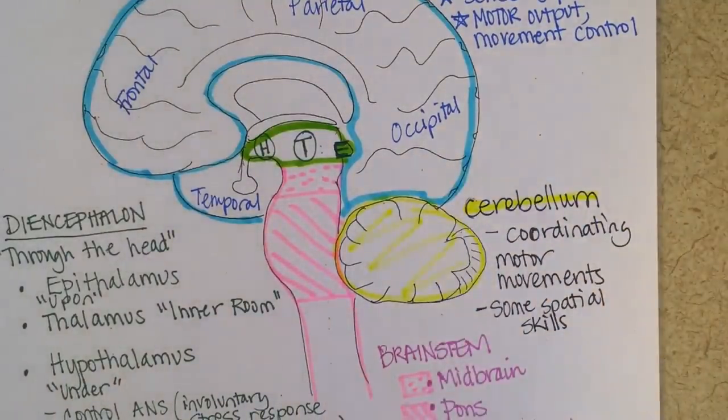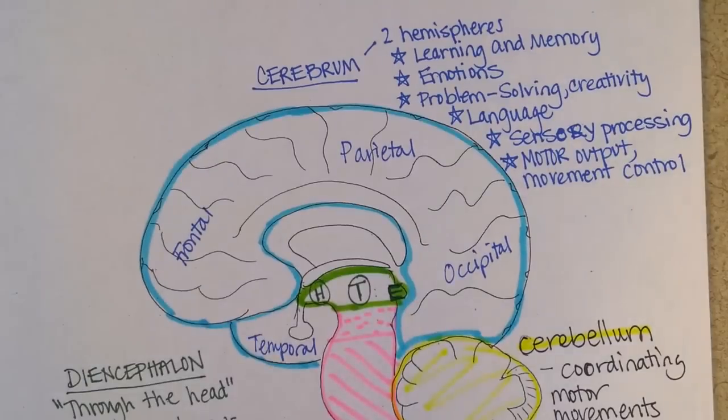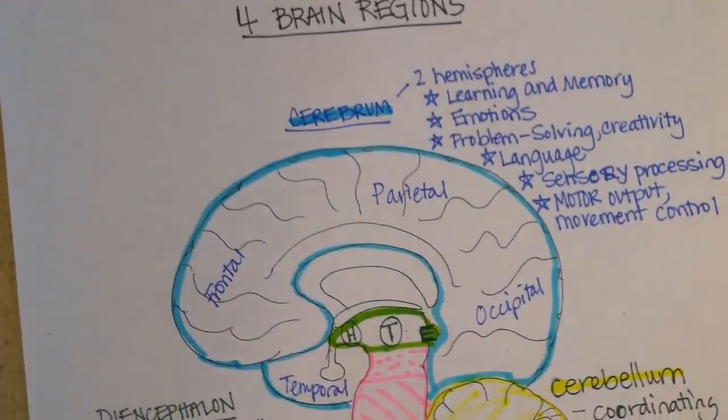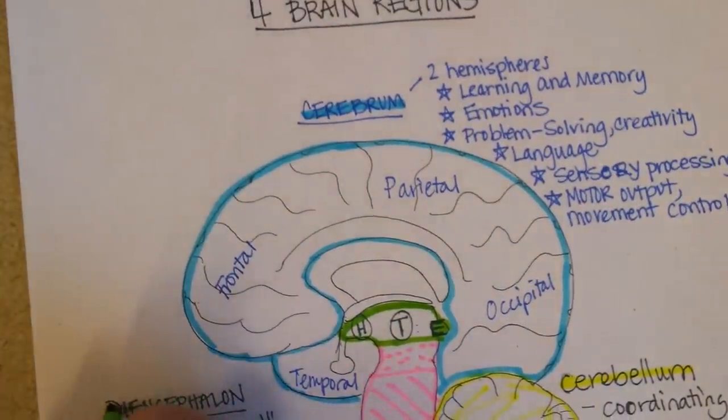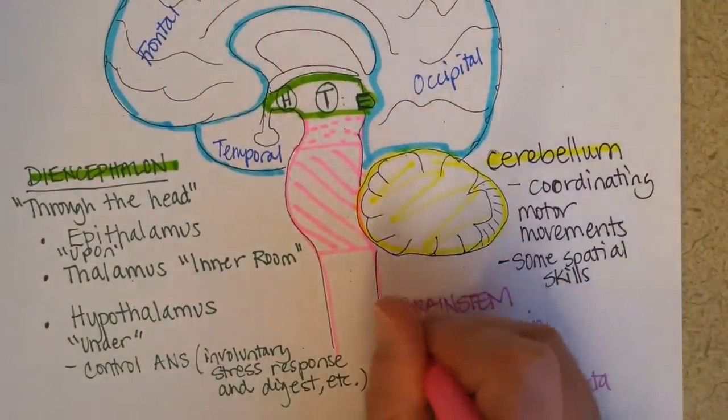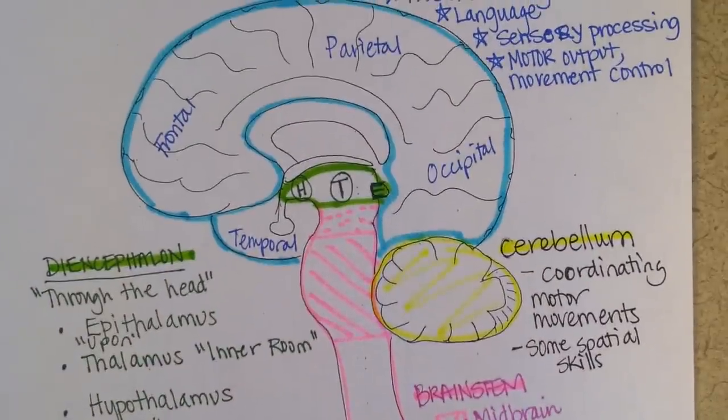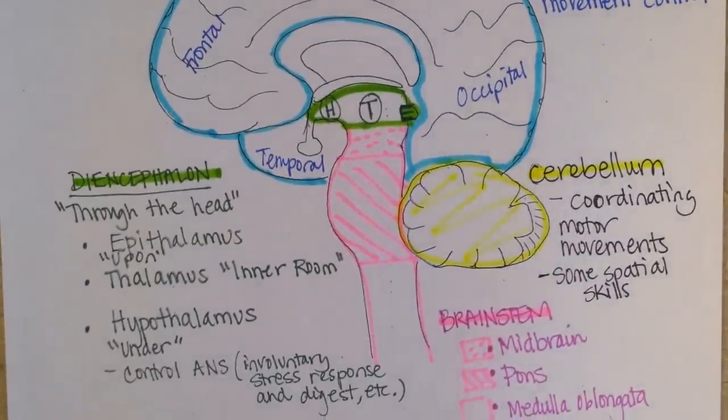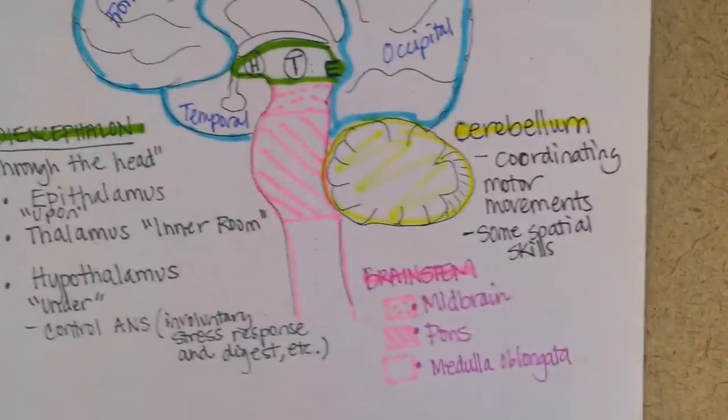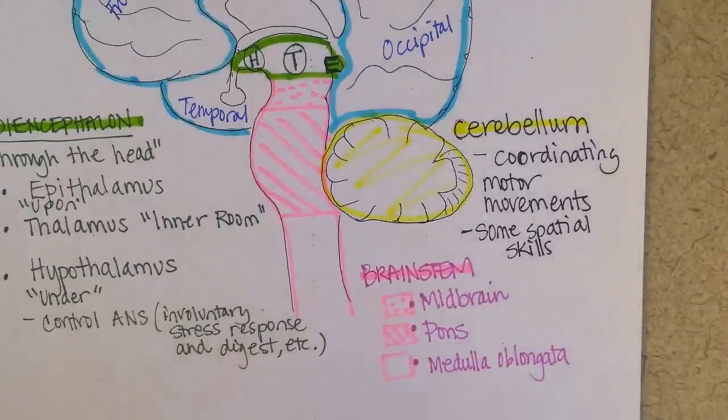So if I were to ask you, what are the four regions of the brain after looking at this page, you should be able to tell me pretty confidently. The cerebrum, the diencephalon, the brain stem, and the cerebellum. If I were to ask you what are the three parts of the diencephalon, you would be able to tell me the epithalamus, the thalamus, and the hypothalamus. If I were to ask you what are the three parts of the brain stem, you would be able to tell me the midbrain, the pons, and the medulla oblongata.